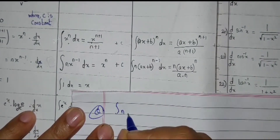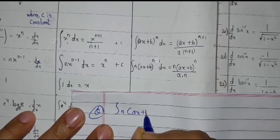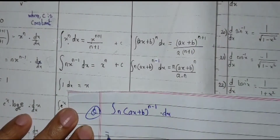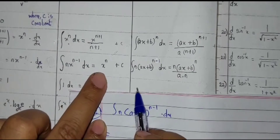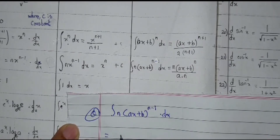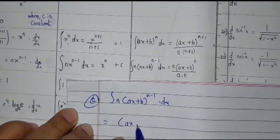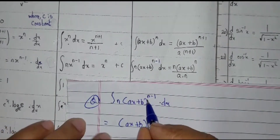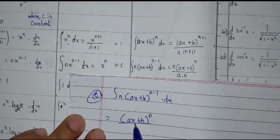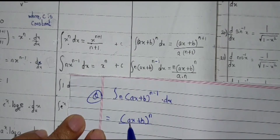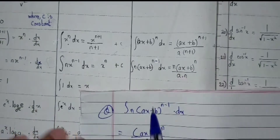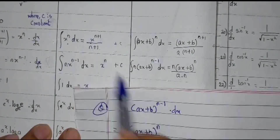In the exam, they may ask: integration of n times ax plus b raised to n minus 1 dx. The answer is x raised to n, where this bracket part is our x. So we write ax plus b raised to n, upon the coefficient of x, which is a. This is the direct answer using the composite function column.